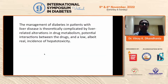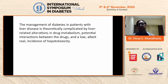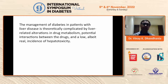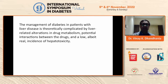Management of diabetes in patients with liver disease is theoretically complicated by liver-related alterations in drug metabolism, potential drug interactions, and low but real incidence of hepatotoxicity. Drugs bound to plasma proteins — like sulfonylurea — are a concern in patients with chronic liver disease who tend to have hypoproteinemia, where free drug levels can be high and risk causing hypoglycemia. Drug-to-drug interaction also becomes very, very crucial.